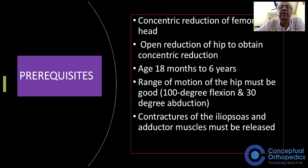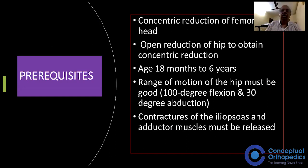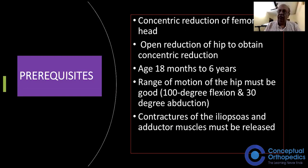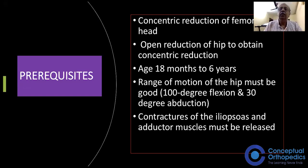The prerequisites of Salter Osteotomy: first, concentric reduction of the femoral head is required. If concentric reduction of the femoral head cannot be attained in a case of DDH, you will have to perform open reduction of the hip to obtain concentric reduction.